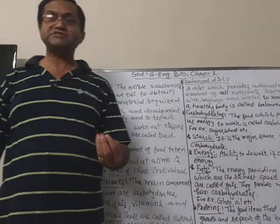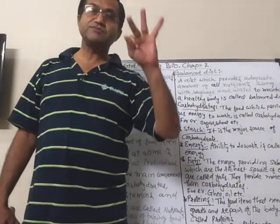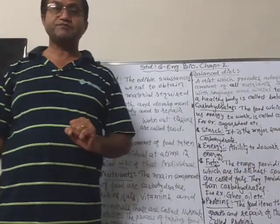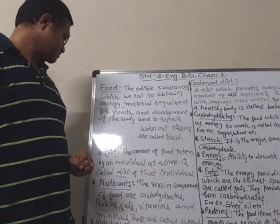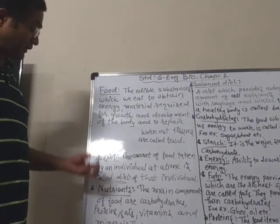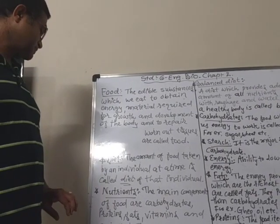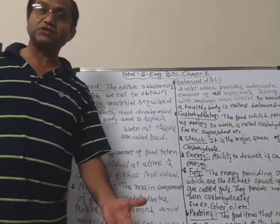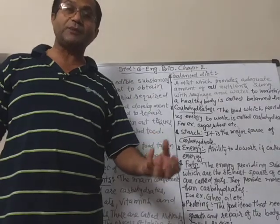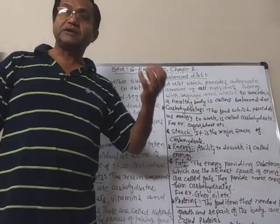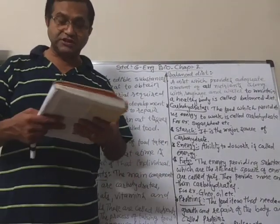Now, nutrients: the main components of food — like carbohydrates, proteins, fats, vitamins, and minerals — are known as nutrients. And nutrition means taking these nutrients which provide us energy, help in growth, and in the repair of the body. That process of taking food which helps in giving energy and growth is known as nutrition.